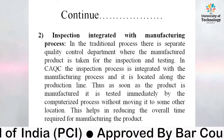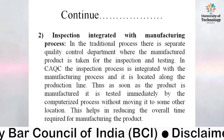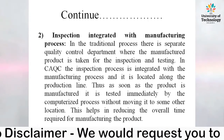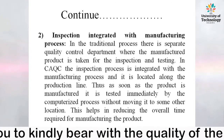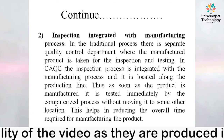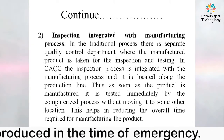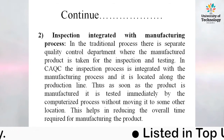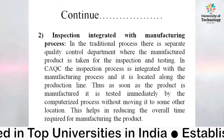The second advantage is inspection integrated with the manufacturing process. In the traditional process, there is a separate quality control department where the manufactured product is taken for inspection and testing. In Computer Aided Quality Control, the inspection process is integrated with the manufacturing process and is located along the production line. Thus, as soon as the product is manufactured, it is tested immediately by the computerized process without moving it to another location, reducing the overall time required for manufacturing.